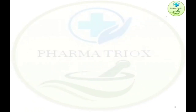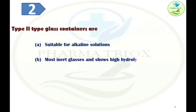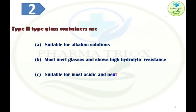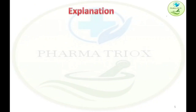Moving on to the second question. Type 2 glass containers: Option A — suitable for alkaline solutions. Option B — most inert glasses showing high hydrolytic resistance. Option C — suitable for most acidic and neutral aqueous preparations. Option D — suitable for non-aqueous preparations. The correct answer is option C: suitable for most acidic and neutral aqueous preparations.